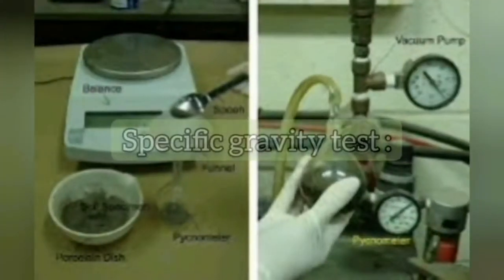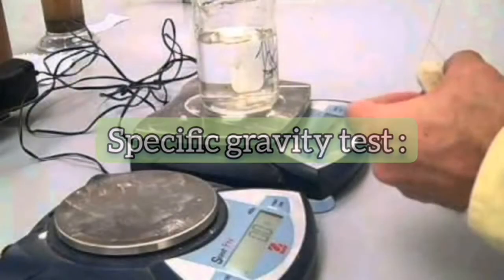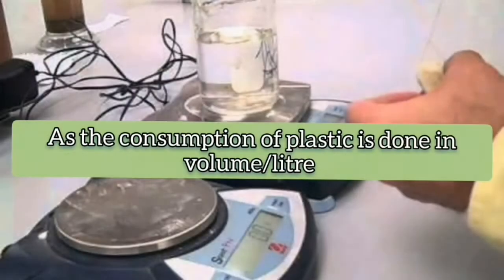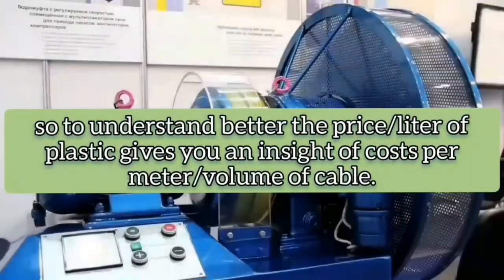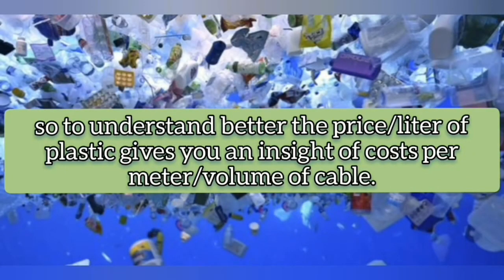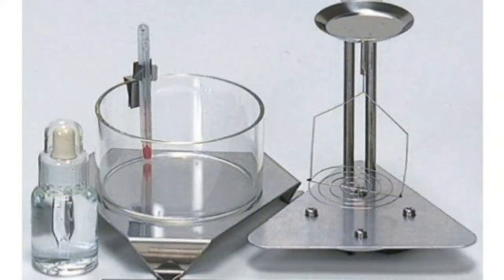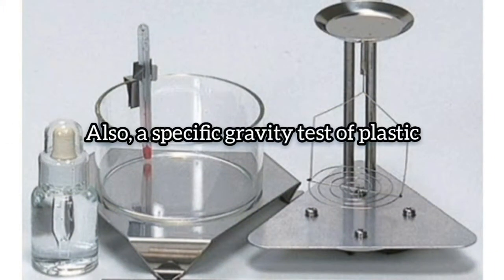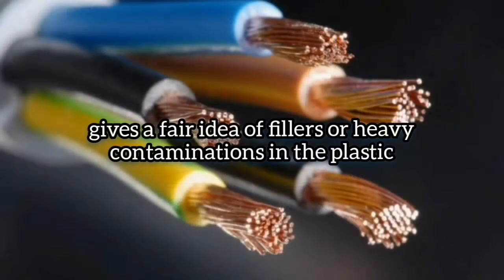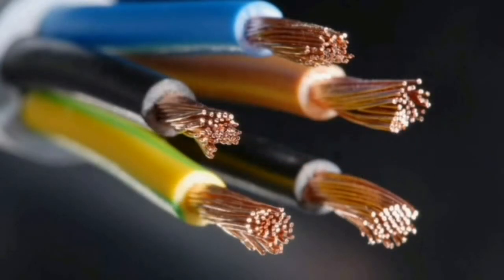The Specific Gravity Test of Plastics. This test is very important to cable cost optimization as the consumption of plastic is done in volume, liters, whereas you buy it in kilograms. So to understand better, the price per liter of plastic gives you an insight of costs per meter volume of cable. Also, a specific gravity test of plastic, generally called density, gives a fair idea of fillers or heavy contaminations in the plastic.